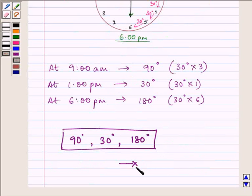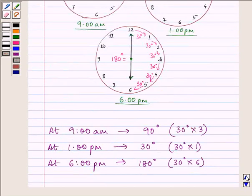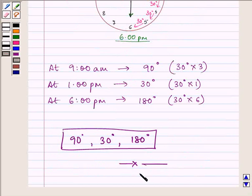This completes the question. Just remember that when the hour hand moves from one number to another, it makes an angle of 30 degrees. The number of moves can be multiplied to get the required answer. Bye for now.